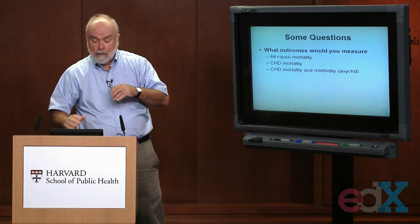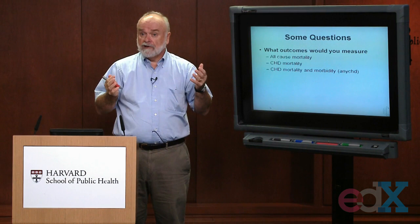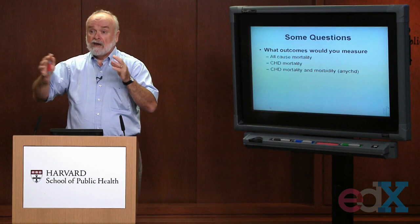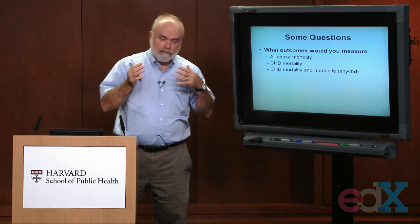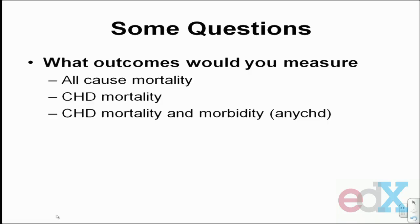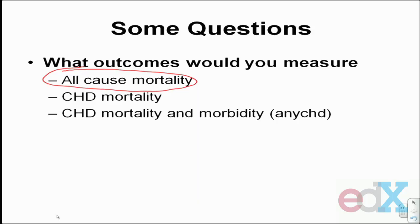Now, having enrolled our people, decided how to measure the exposure, and decided how to observe follow-up, we have to measure outcomes. Maybe the primary outcome of interest to most epidemiologists is all-cause mortality — does some risk factor increase your risk of death? But if you want to know whether smoking increases the risk of death, you might be more interested in deaths that might be attributed to smoking, like coronary heart disease mortality.